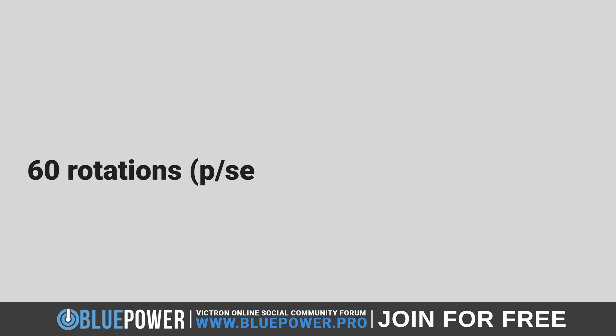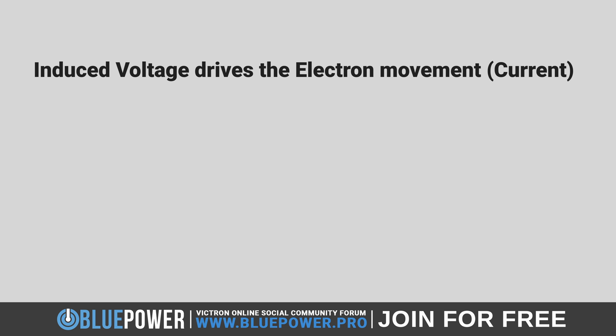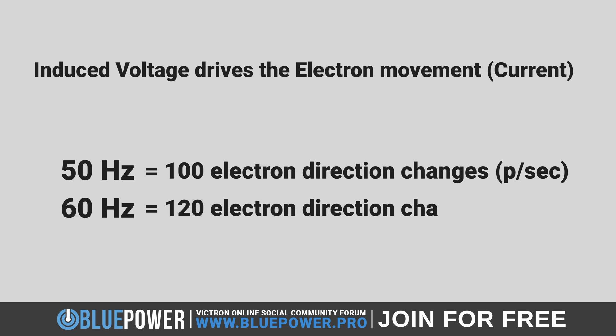Therefore, in the case of a 60 Hertz frequency, this alteration in voltage occurs 120 times per second. Given that voltage is the driving force behind electron movement in creating an electrical current, these electrons switch directions 100 times a second at 50 Hertz and 120 times a second at 60 Hertz, facilitating the flow of alternating current.